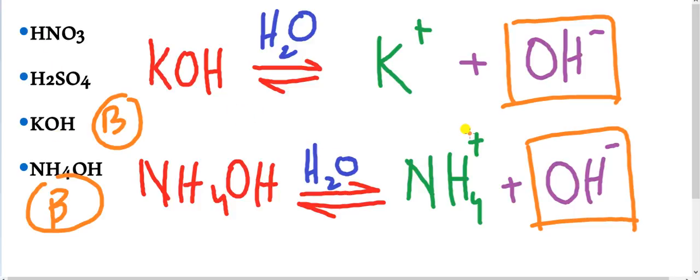And according to Arrhenius, Hydrogen ions production, which is the acid, indicates it. And Hydroxyl ions production, which is the base, indicates it.